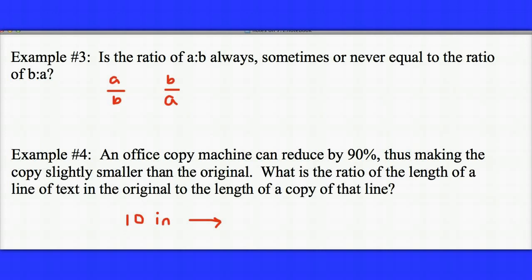Let's take a look at some other examples. Is the ratio of a to b always, sometimes, or never equal to the ratio of b to a? Well, obviously, if a and b were numbers like 3 and 4, 3 over 4 is not the same as 4 over 3. But if a was equal to b, then obviously, like if a and b were both 5, 5 over 5 would be the same as 5 over 5.